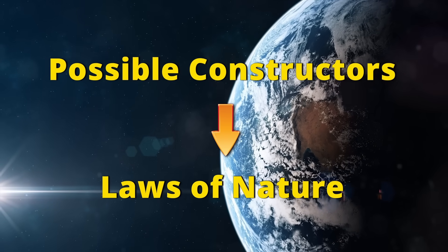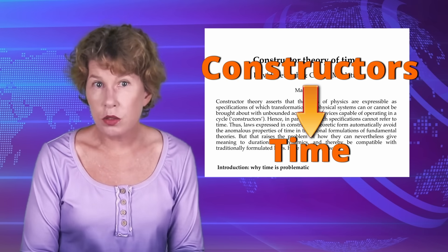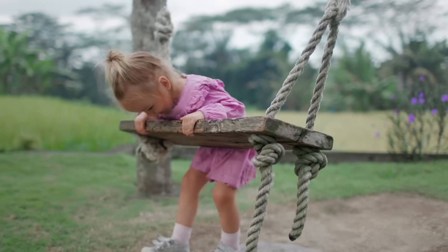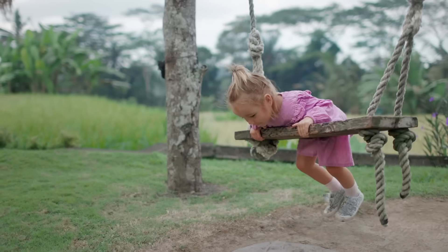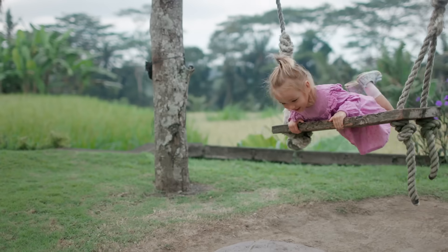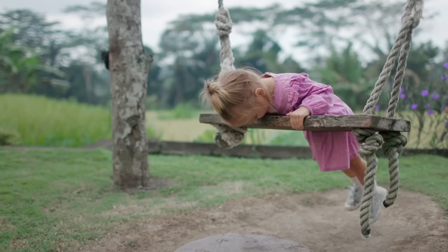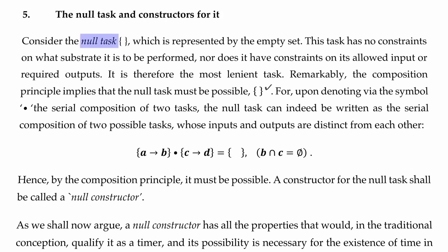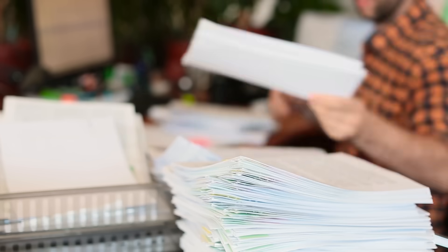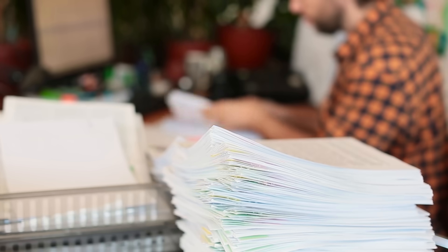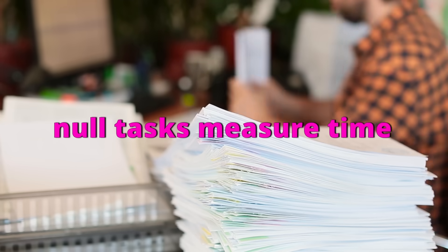In their new paper, they formulate a way one can use constructors to construct time. Your first idea might be to use constructors that perform recurring tasks, because this is similar to an oscillation of sorts, and that's what one normally does to construct clocks. But this doesn't work, because one can't know whether the recurrent task actually happens in the same time periods — it could just be getting slower and slower, like Windows updates. What they do instead is identify a shortest task, and that is doing nothing: it's when a constructor turns on and just turns off. They call this the null task. They take all these possible null tasks, group them together, and then measure the changes in any system relative to these null tasks. This means one has now introduced a measure of change, which is time, in some sense.